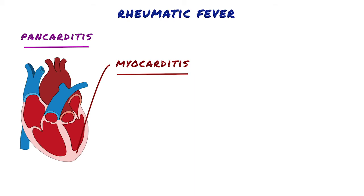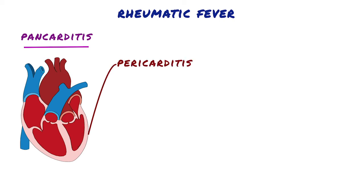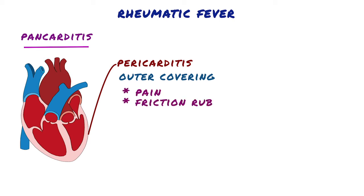Myocarditis is the most common cause of death in acute rheumatic fever, because this inflammation and necrosis makes the heart wall unable to contract with full force, which results in heart failure. Finally, there's pericarditis, or inflammation of the outer covering of the heart called the pericardium, which can cause pain as well as a friction rub from the inflamed visceral pericardium rubbing against the inflamed parietal pericardium, which can be heard with a stethoscope.